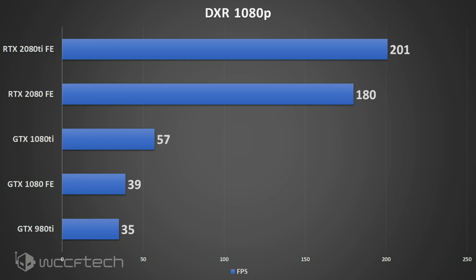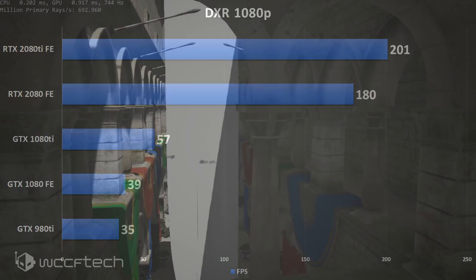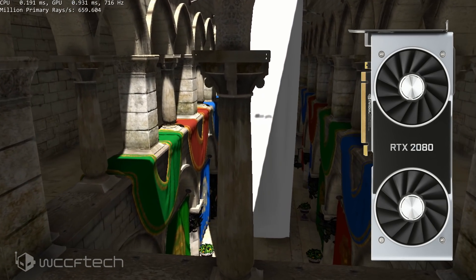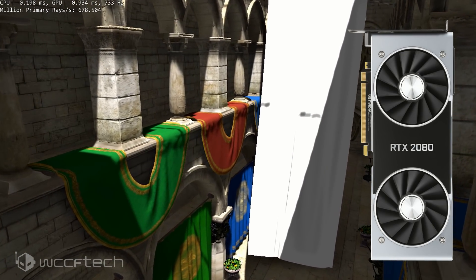The 980 Ti pulls out four frames behind the 1080 Founders Edition: 35 vs. 39 fps. The 1080 Ti is a great leap above the 1080 at 57 fps, but honestly that's literally one-third of what the RTX 2080 is doing. The 2080 Ti is 21 fps faster than the 2080 — that shows you where we are with DXR performance.